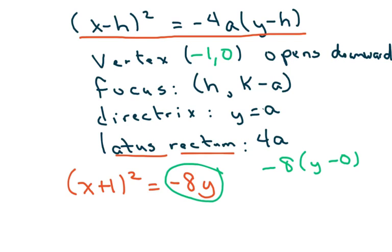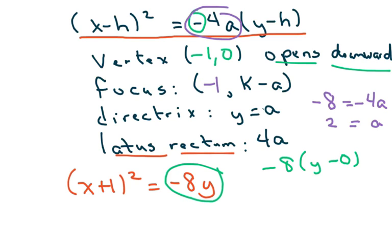My focus is going to be on the y. This opens downward because of this negative here. So my focus is going to be h which is negative 1, and then we're going to have 0 minus a. Now your a is coming from here. Since we have negative 8y, where negative 8 equals negative 4a, my a equals 2. So basically I'm going to have 0 minus 2 is negative 2.